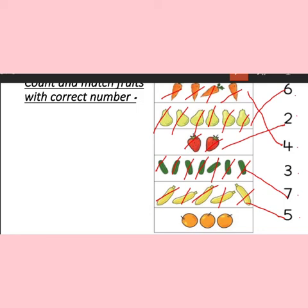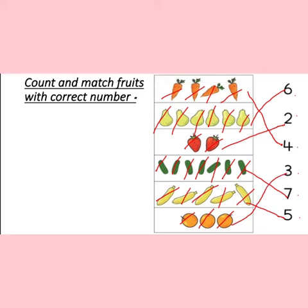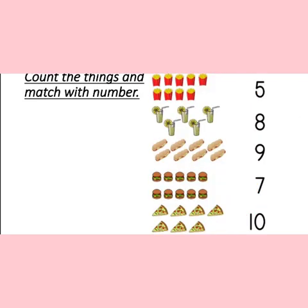And the last one — there are oranges. Let's start counting: one, two, three. These are three. There is number three and we will match with number three.